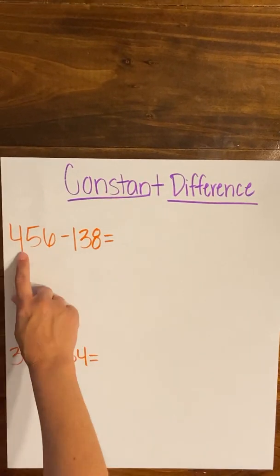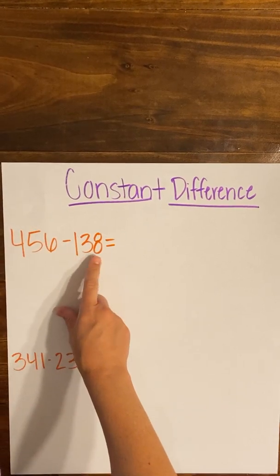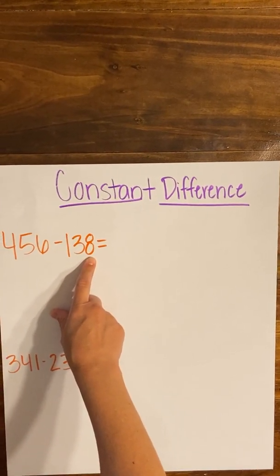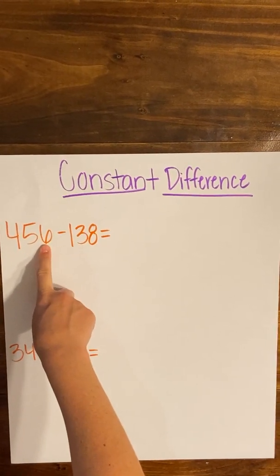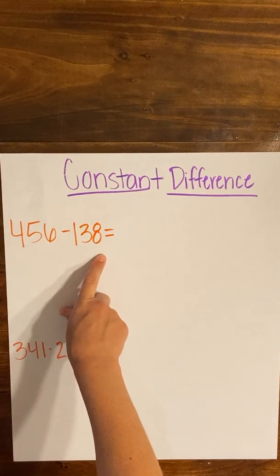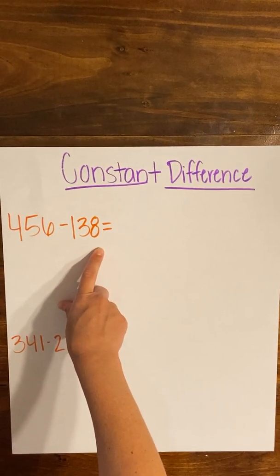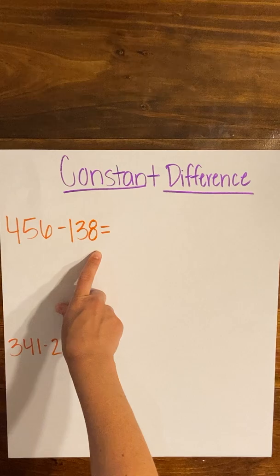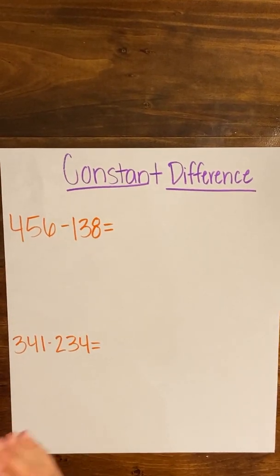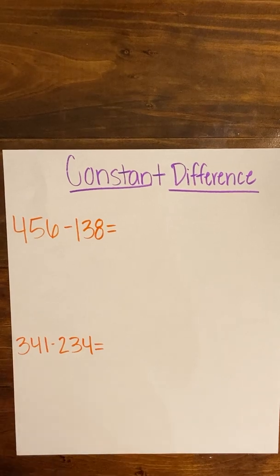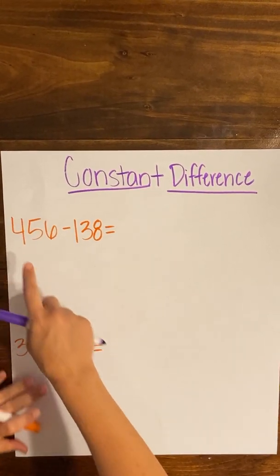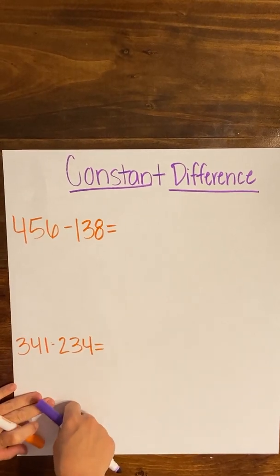So if I look at 456 minus 138, I know that I'm going to have to regroup in my ones place because this eight is larger than the six in the ones place. So to avoid regrouping, I'm going to change the numbers to make them easier to work with. When you're using the constant difference strategy, you're trying to keep the distance between the two numbers the same, and to do that you're going to make adjustments to both sides.